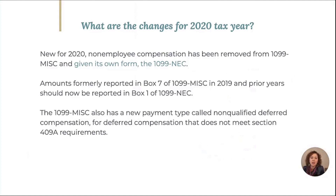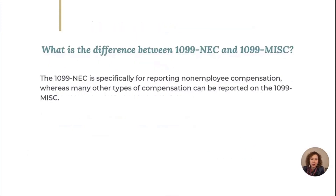The first thing to know is that as of the 2020 tax year there is a new form that replaces the old 1099 Miscellaneous, but only as far as box 7 is concerned. The amount that was formerly box 7 on the 1099 Miscellaneous as of 2019 and prior is now box 1 on the 1099 NEC. The 1099 NEC specifically reports non-employee compensation — subcontractors and independent people — whereas any other compensation is still on the 1099 Miscellaneous.